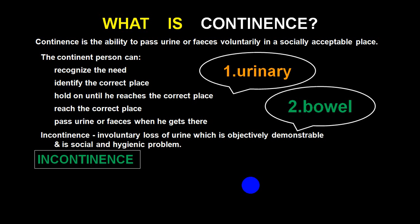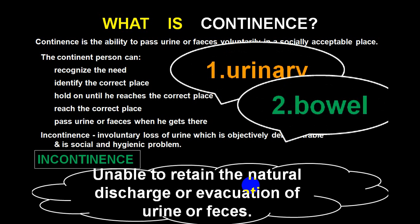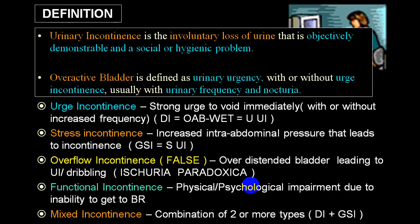Continence can be urinary or bowel. The person will recognize the need, will identify the correct place, will hold on until they reach the correct place, and passes urine or feces when they get there. Incontinence means involuntary loss of urine which is objectively demonstrable and is a social and hygienic problem. Urinary incontinence means involuntary loss of urine that is objectively demonstrable and a social and hygienic problem.